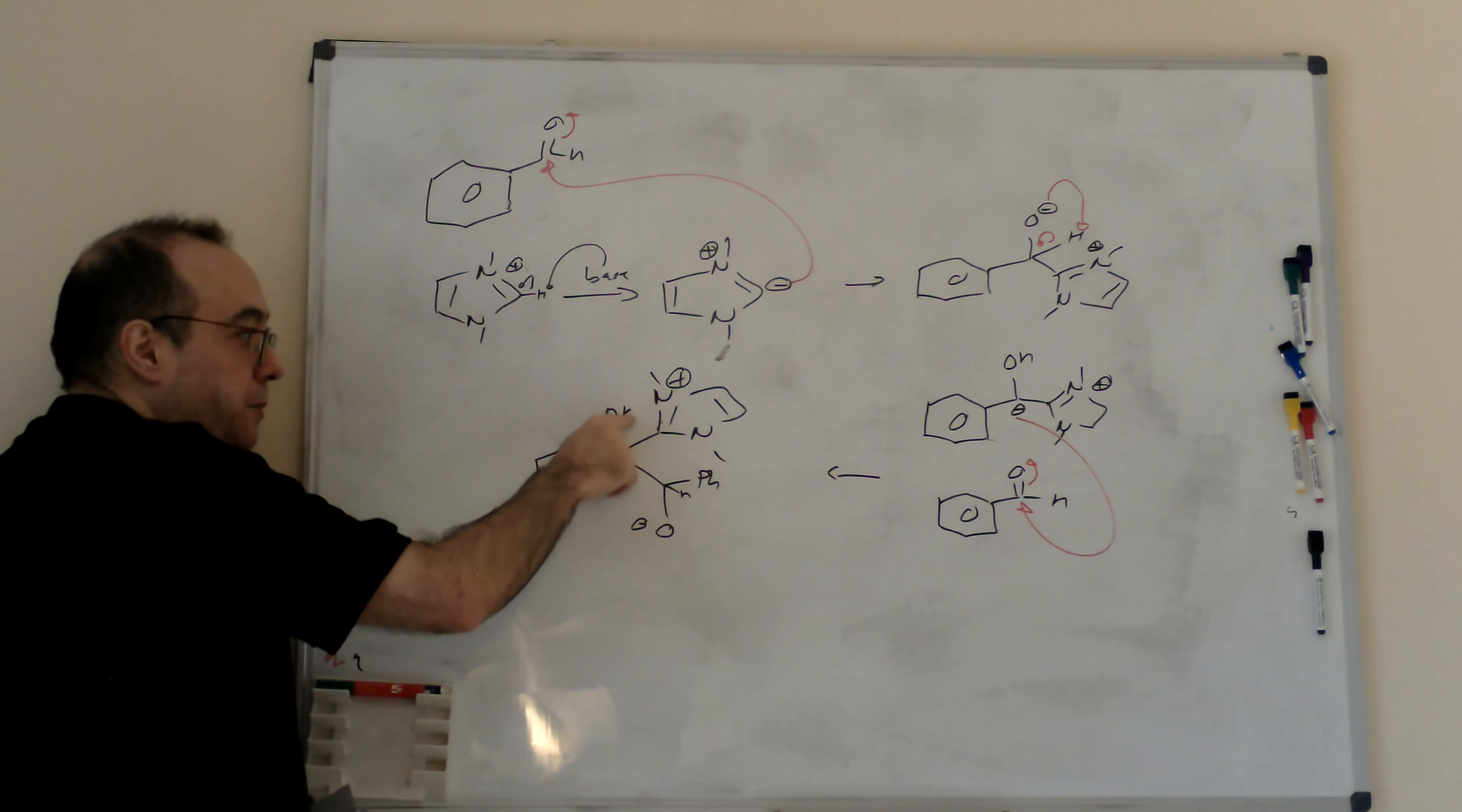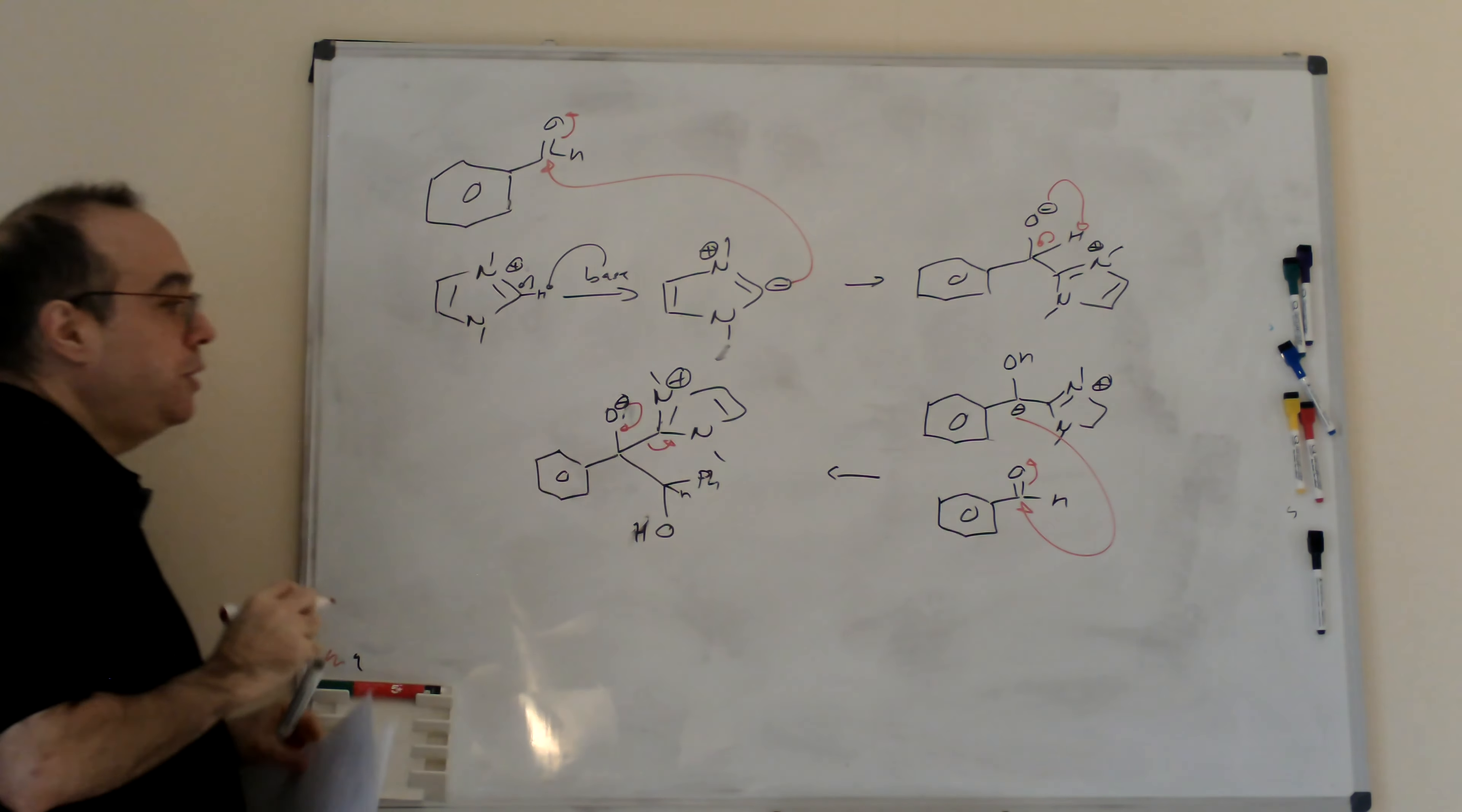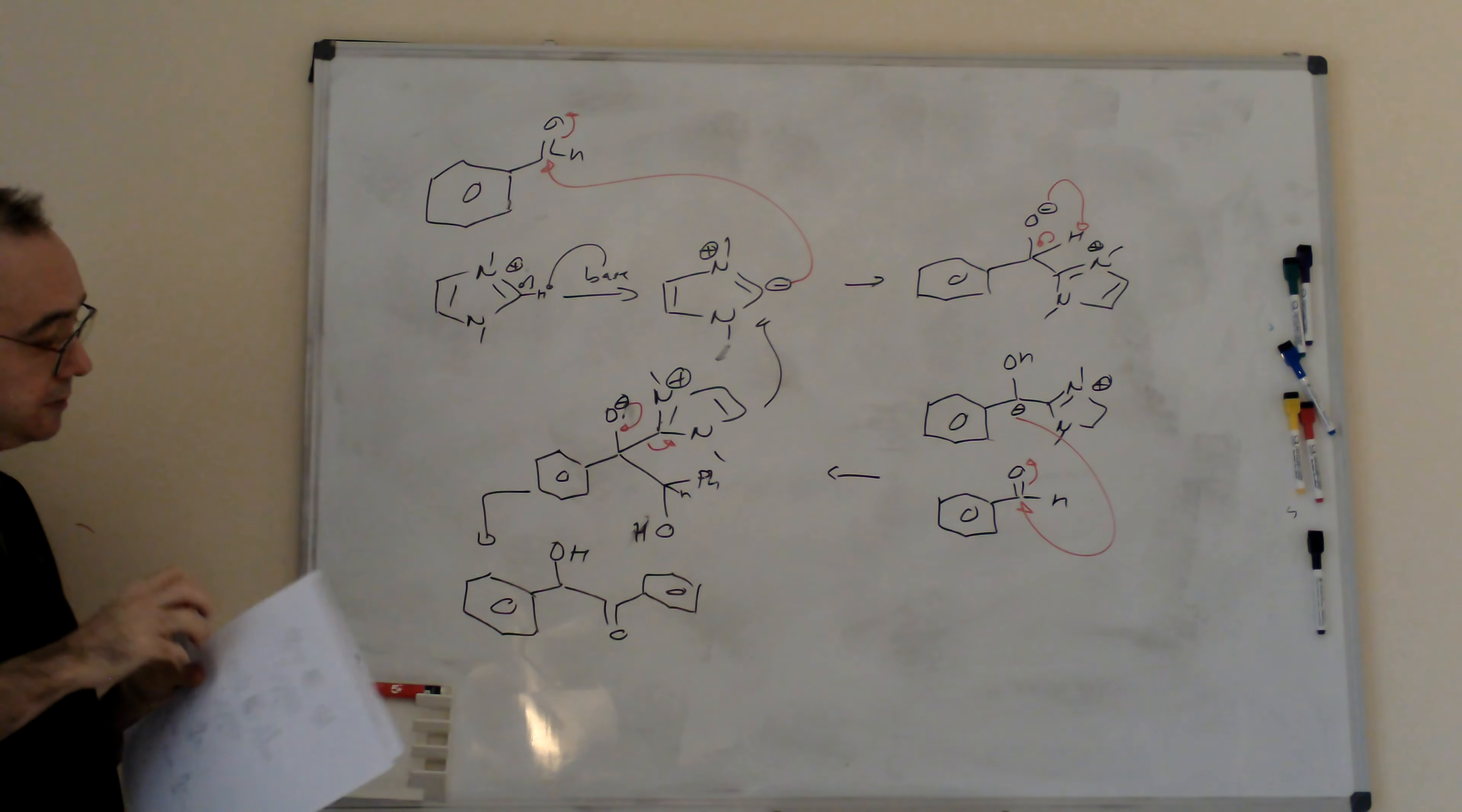We got this intermediate. Simply, once I have this, I do, I move the charge. That means I put the wedge here and the O minus here. And then remember, the carbene is a very good leaving group. We regenerate the double bond and we got the carbene again and the final product that is the benzoyl product.